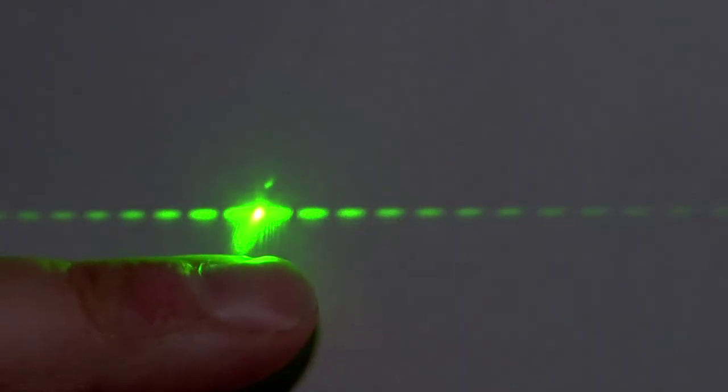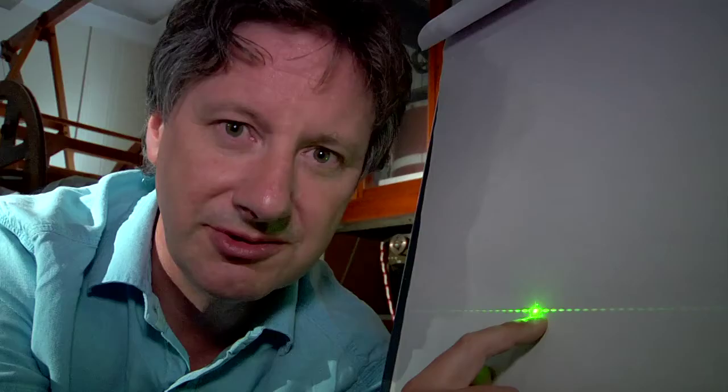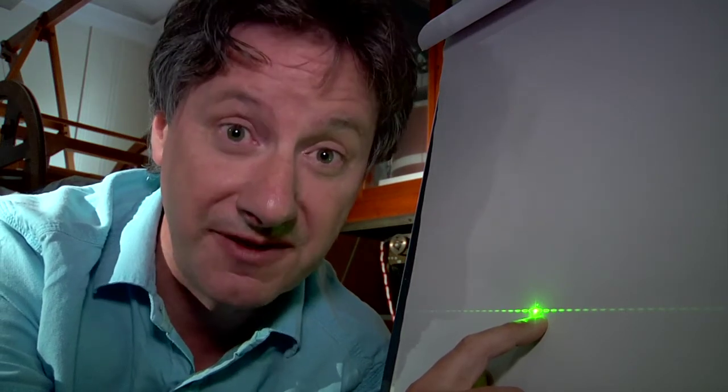If you move a little bit further out on the pattern, we reach a dark region. What's happening here is that the light waves which have come around one side of the wire are arriving exactly out of step, that is, out of phase, with the light waves which have traveled around the other side of the wire. That leads to destructive interference.